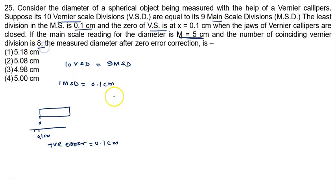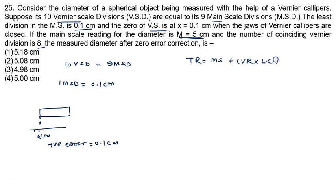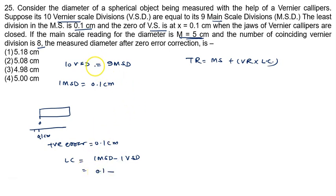The coinciding Vernier division is 8. Before applying zero correction, the total reading is given by: main scale reading plus Vernier reading multiplied by least count. The least count is defined as 1 MSD minus 1 VSD.